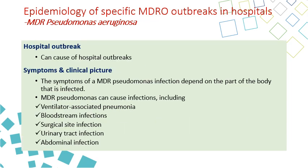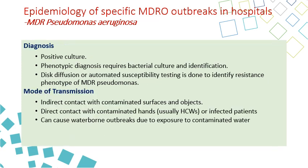MDR Pseudomonas aeruginosa can cause hospital outbreaks, and symptoms depend on the body part affected. The most common infections include pneumonia, ventilator-associated pneumonia (VAP), bloodstream infection, surgical site infection (SSI), urinary tract infection, and abdominal infection. Diagnosis is by positive culture, phenotypic diagnosis, and disc diffusion or automated susceptibility testing for resistance.